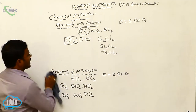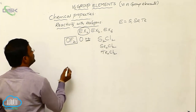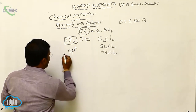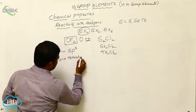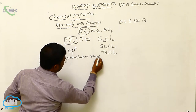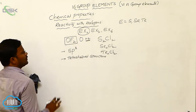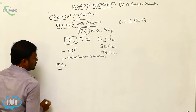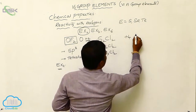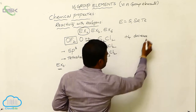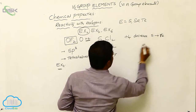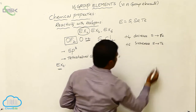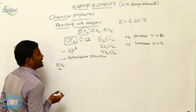In the dihalides of Group 16 elements, they show SP3 hybridization with a tetrahedral structure. EX2 type halides from Group 16 elements exhibit tetrahedral geometry. The +4 oxidation state decreases from sulfur to tellurium, whereas the +6 oxidation state increases from sulfur to tellurium. The +4 oxidation state is most prominently exhibited by sulfur.